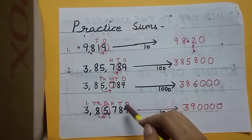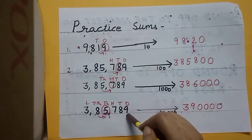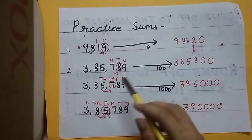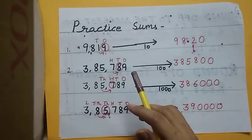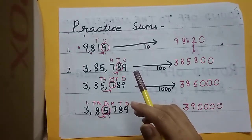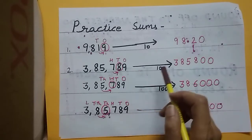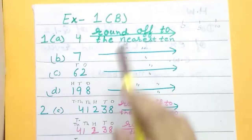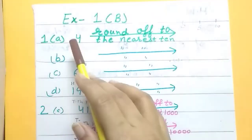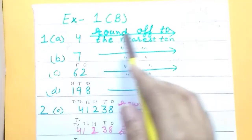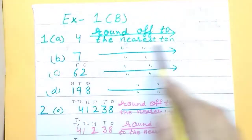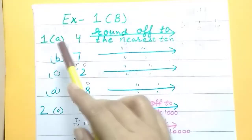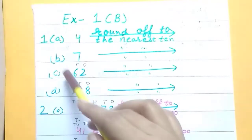If this topic is clear, let's start exercise 1b, which is based on estimation. Have you done the practice sums from exercise 1a? If done, very good; if not, you will do today. Now let's start exercise 1b. Question number one: round off the following numbers to the nearest ten. You will do parts a, b, c, and d.